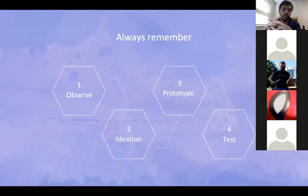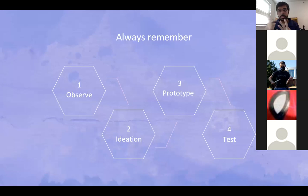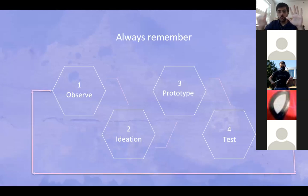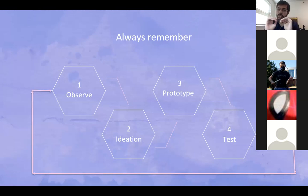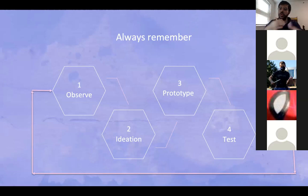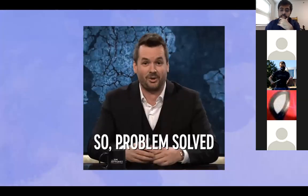Always remember that the final step of design thinking is the iteration — no one talks about that step, but it's the important one. You need to observe, ideate, make a prototype, and test it — but don't forget to repeat the process. Keep going on and on till you perfect the product. The reason so many products around us are so good is because of the iteration, not just the initial idea. The first idea never clicks — it's always the second, the third, the fourth, and how you keep going on and on. Just like that, you solve all your problems.